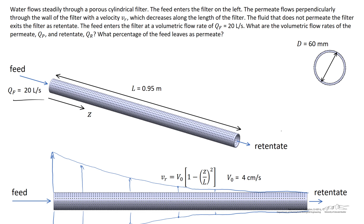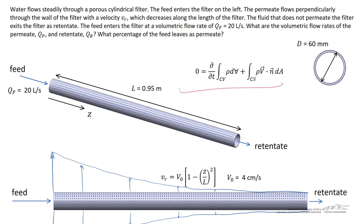The volumetric flow rate of the feed is equal to 20 liters per second. The volumetric flow rate of the retentate has to be smaller than the volumetric flow rate of the feed, because some of the water leaves as permeate. By conservation of mass, the volumetric flow rate of the feed equals the volumetric flow rate of the permeate plus the volumetric flow rate of the retentate. We want to find the volumetric flow rate of the permeate, the retentate, and the percentage of feed which leaves as permeate. To solve this problem, let's work with the conservation of mass equation.